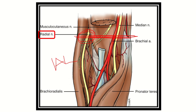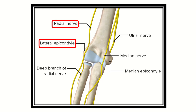We can also see here the median nerve, which lies in the medial part, and the brachial artery just lateral to the median nerve, along with the bicipital aponeurosis. In this picture we can also see that the radial nerve first runs posteriorly, then in the supracondylar area it comes forward and anterior to the distal part of the humerus, near the lateral condyle.